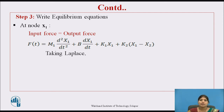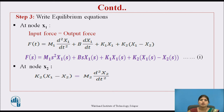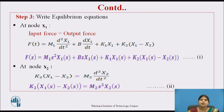Taking the Laplace of the equation at node X1 gives: F(S) = M1·S²·X1(S) + B·S·X1(S) + K1·X1(S) + K2·(X1(S) − X2(S)). This is Equation 1. At node X2: K2·(X1 − X2) = M2·(d²X2/dt²). Taking the Laplace gives: K2·(X1(S) − X2(S)) = M2·S²·X2(S). This is Equation 2.